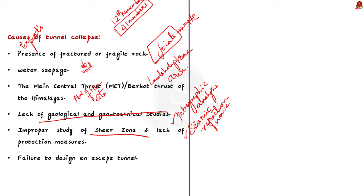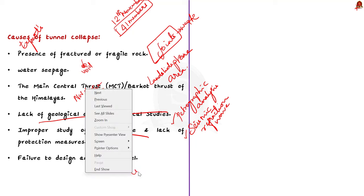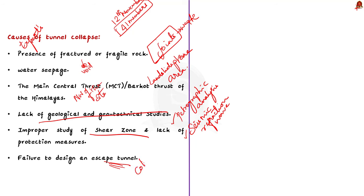Finally, failure to design an escape tunnel is also an issue. The authorities failed to ensure an escape tunnel was designed simultaneously with the main tunnel. Design and construction of an escape tunnel is a must for emergencies like collapse and fire, and it also helps in determining the geology of the main tunnel. For example, an escape tunnel was constructed in the case of the nine-kilometer Chenani-Nashri tunnel in Jammu and Kashmir.